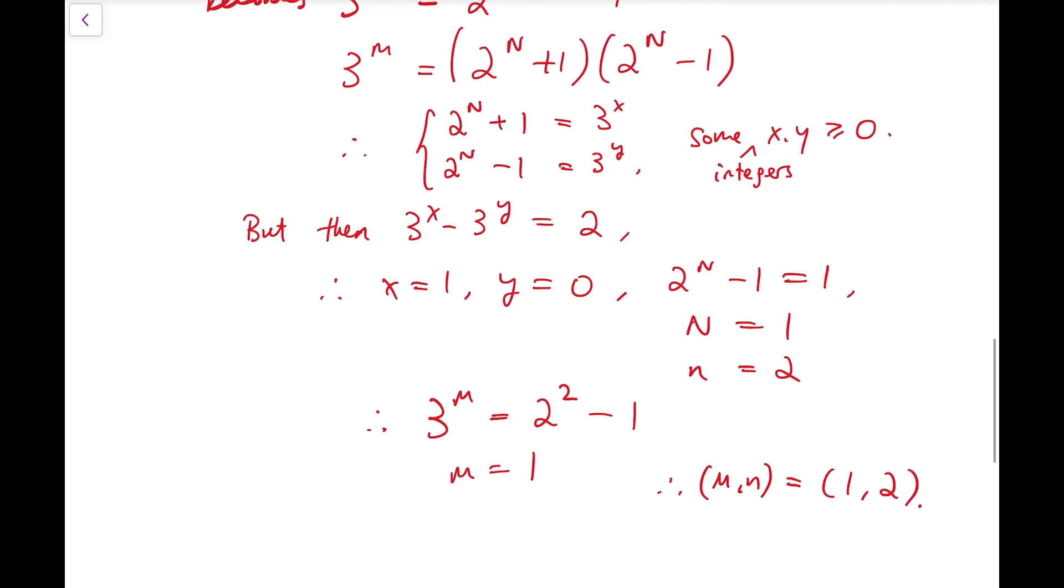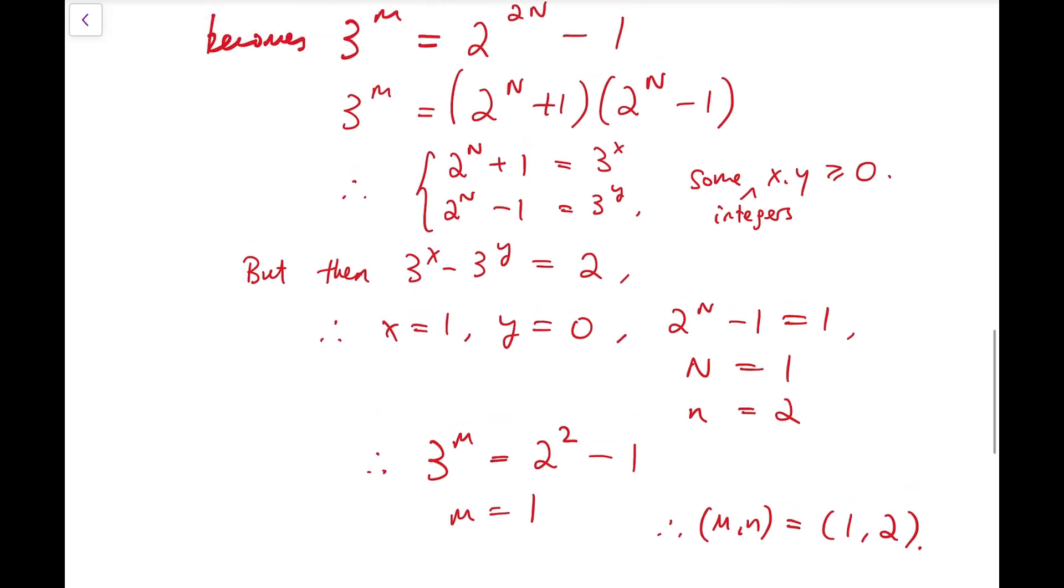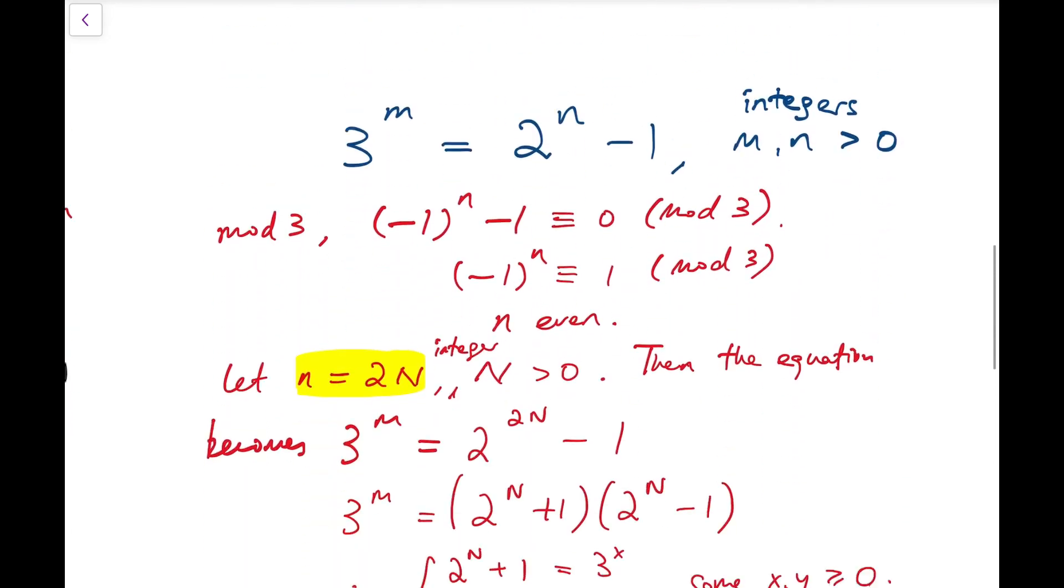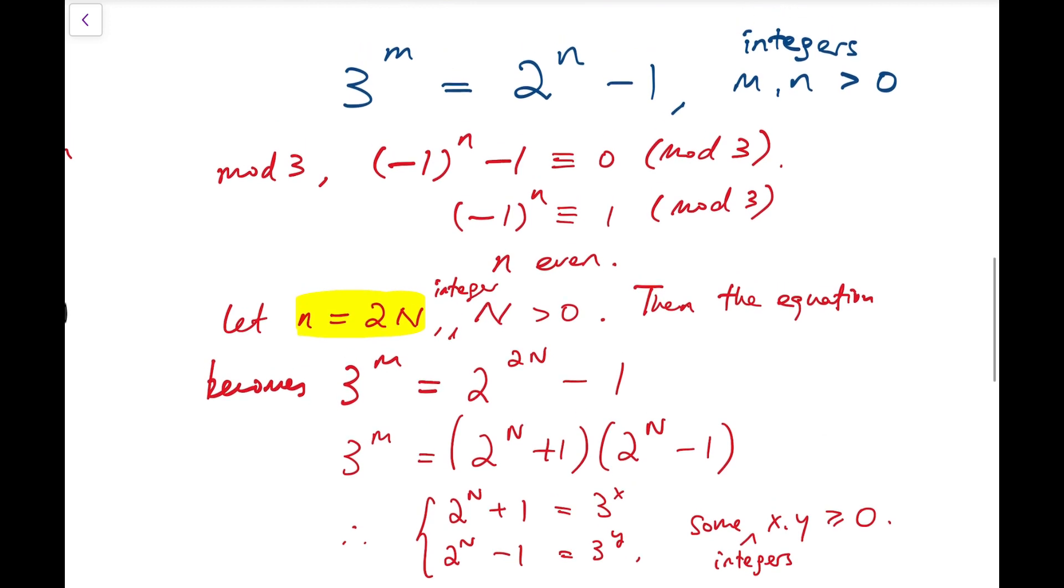So the only solution set possible will be 1 and 2, and we have not set any extra constraints on the positive integers m and n.